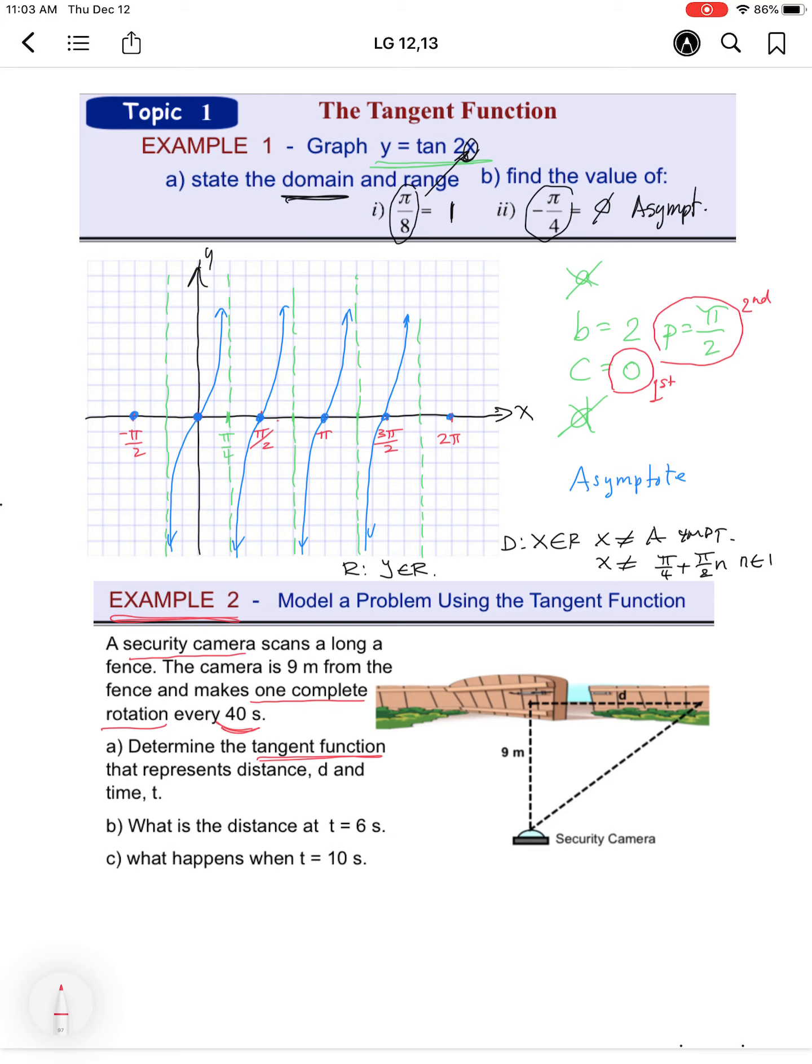We need to get a tangent function equation. The distance equals—the 9 stands for the vertical stretch of this tan wave, it's not an amplitude. It rotates every 40 seconds; a tan wave period is half of that, so it's π over 20 times 2t. There's no phase shift. Now for part b.